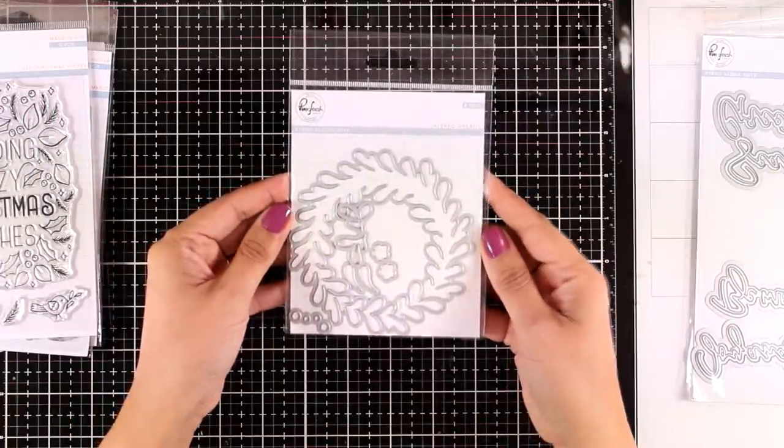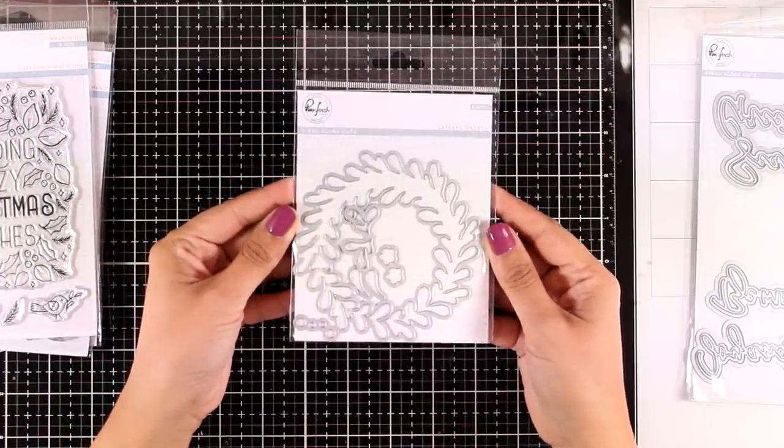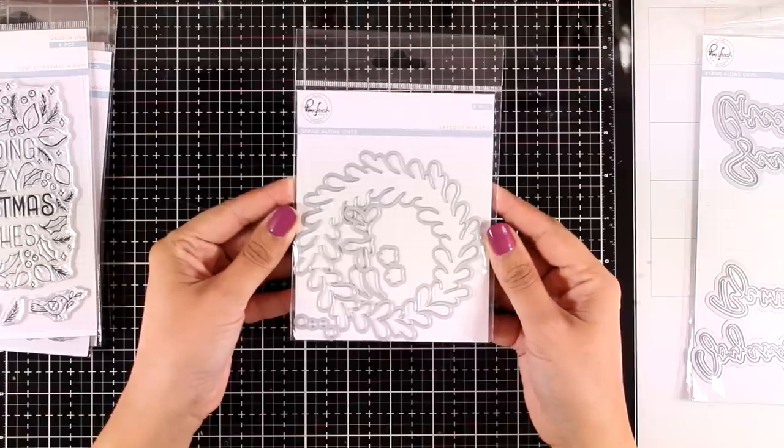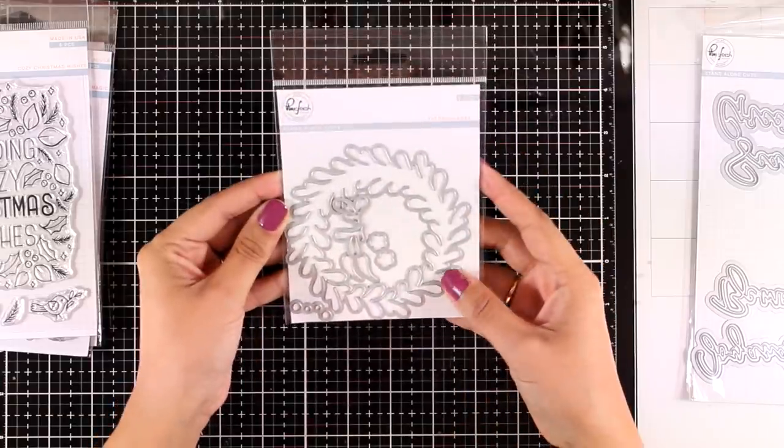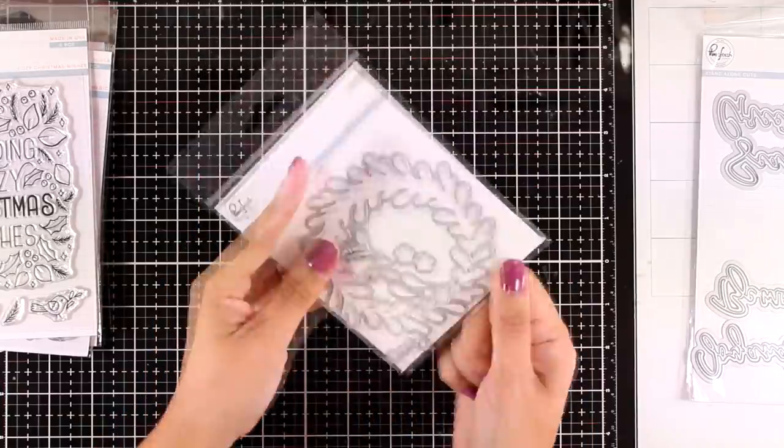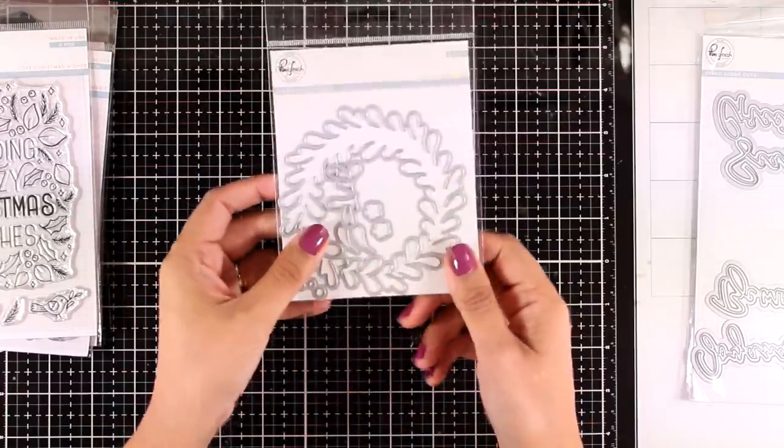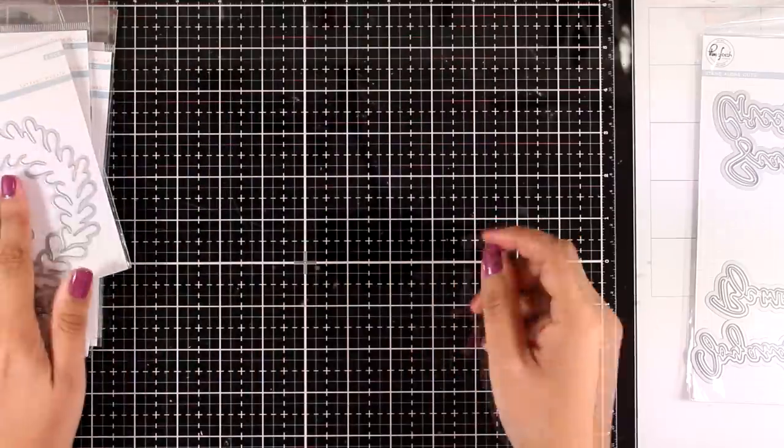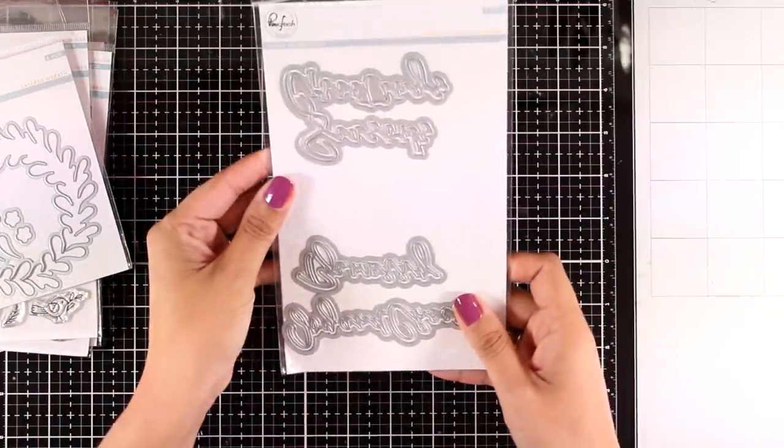Moving on to the dies. This is a die set which is called Layered Wreath. It gives you not only the wreath parts but also some extra leaves that you can cut out to layer on top as well as flowers and little circles. So you can use this die set all year round for Christmas as well as for any other season.